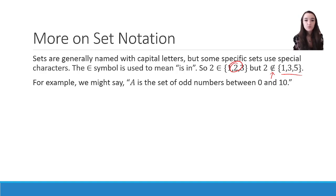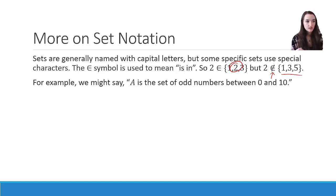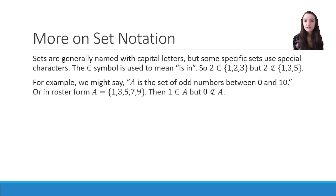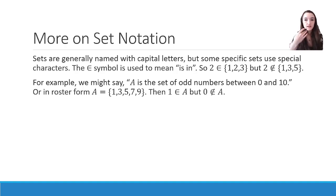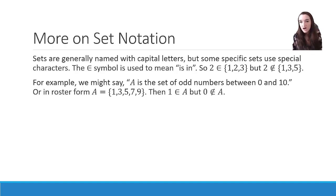For example, we might say A is the set of odd numbers between zero and ten, which we could then list in roster form as A = {1, 3, 5, 7, 9}. We could then say 1 is an element of A, but 0 is not an element of A — because 1 is an odd number between zero and ten, but 0 is not an odd number between zero and ten.